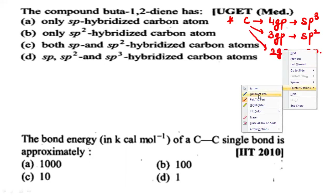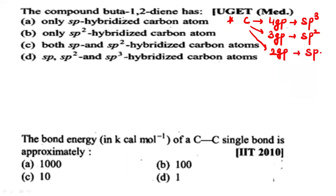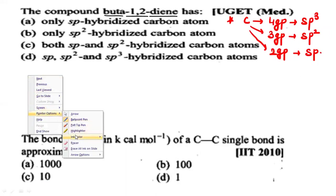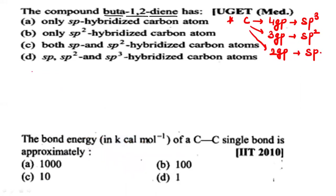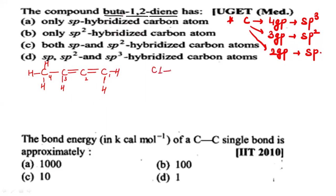In our question they have asked what hybridization is present in buta-1,2-diene. As I've already conveyed in many videos, in a paper they will not draw the structure for you — that should be drawn by yourself. Buta-1,2-diene means two double bonds, so: 1-2-3-4, with double bonds at the 1 and 2 positions. Add hydrogens to fulfill the valence. Now they are asking what hybridizations are present, so let us check each carbon.